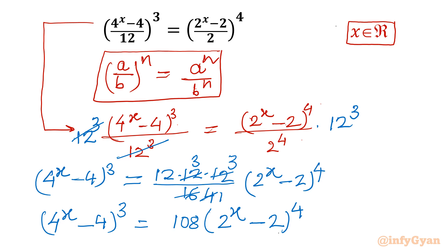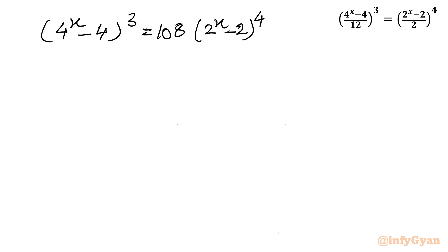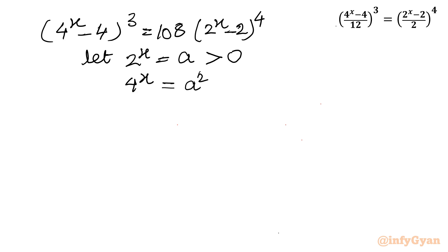Now we use substitution. Let 2^x equal a, so a is always positive. Then 4^x equals a squared. Our equation becomes (a² - 4)^3 equal to 108 times (a - 2)^4.